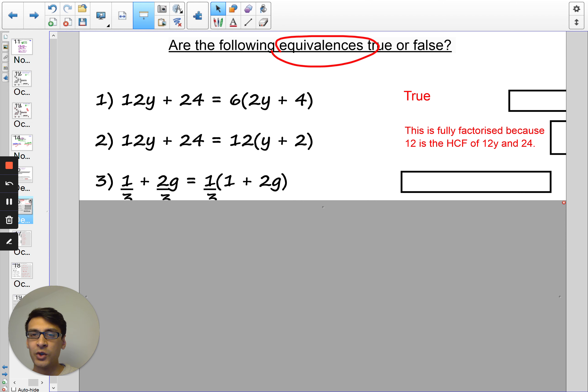Okay. Question 3. Is this fully factorised? Is this equivalent or not? It doesn't have to be fully factorised. Okay. So in this case, it is true. 1 third times 1 is 1 third. 1 third times 2 is 2 thirds.